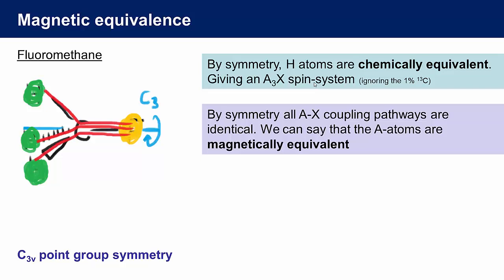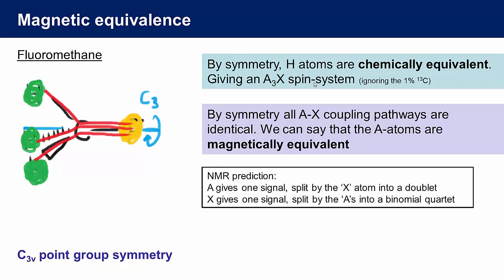We can say that from a coupling perspective, each of the A atoms is magnetically equivalent, and we would successfully predict that the proton NMR spectra would give us a single signal that is split by the fluorine atom into a doublet. Well, the fluorine NMR will give us a single signal that is coupled to the chemically and magnetically equivalent hydrogen atoms giving rise to a binomial quartet.